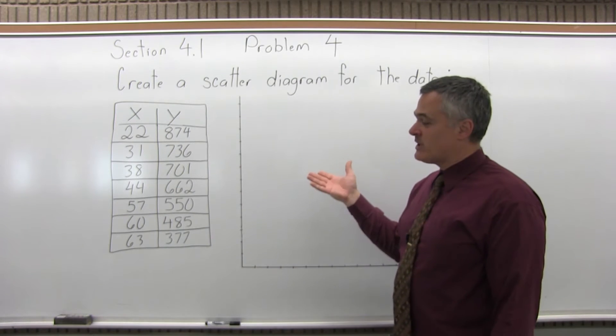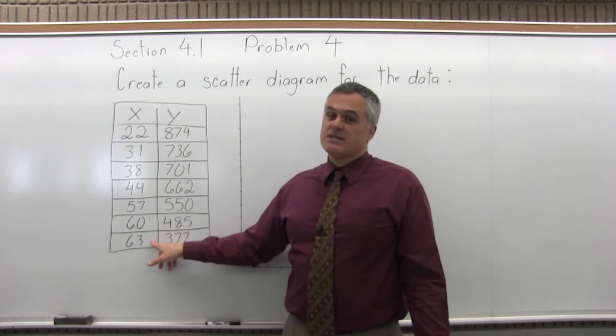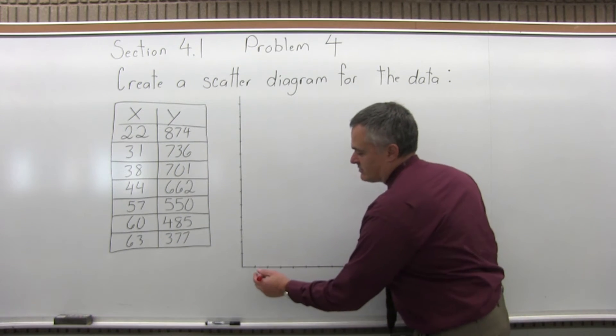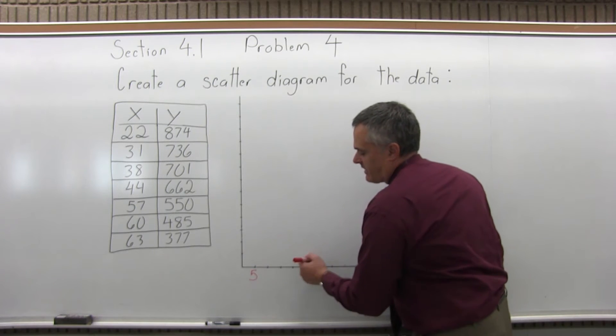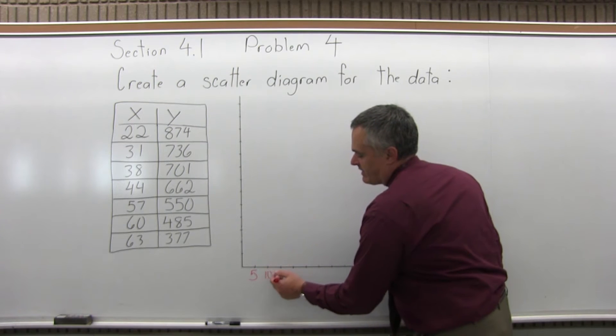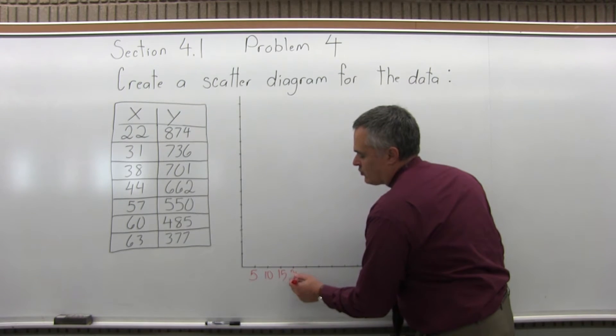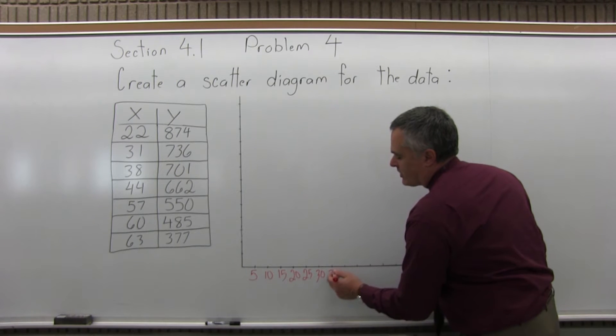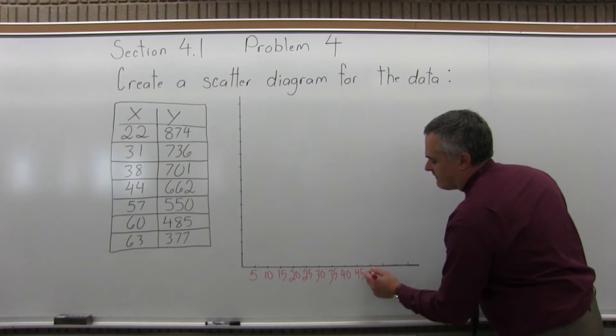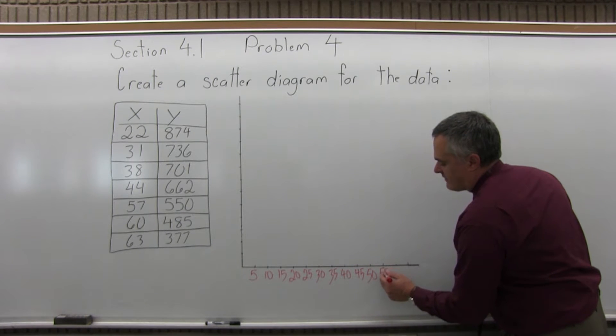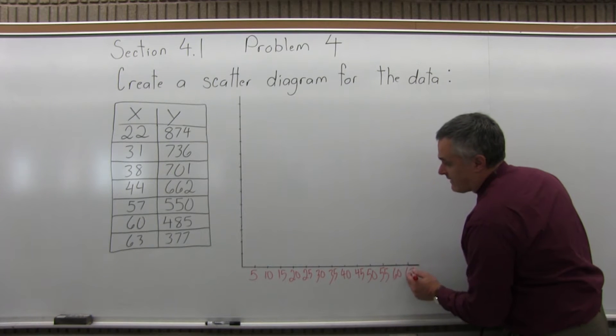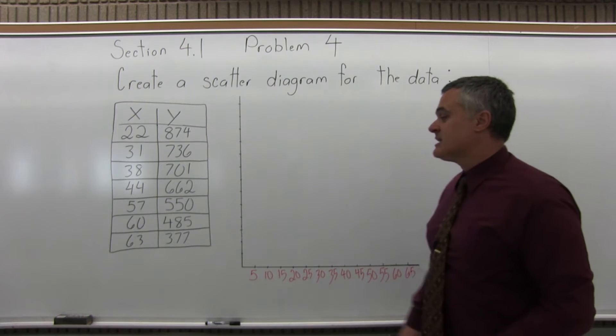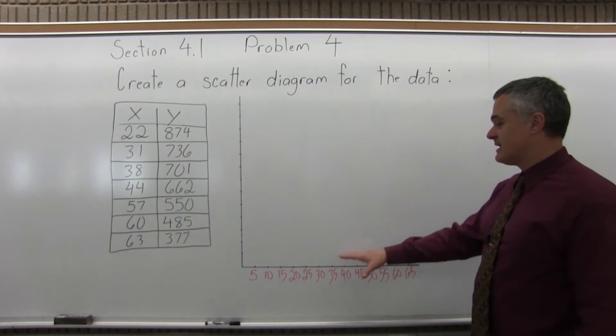Different people might do it different ways. I'll choose by 5's, though 10's really isn't a bad choice either. So for my X values, I will label the X axis 5, 10, 15, 20, 25, 30, 35, 40, 45, 50, 55, 60, 65. And my biggest X value is 63, so 65 is big enough, and that's a nice way to fill it up.